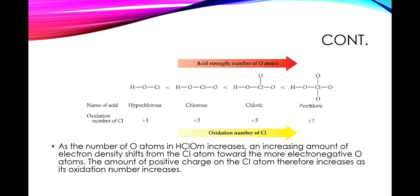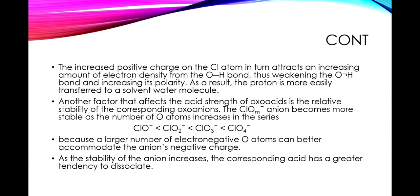As the number of oxygen atoms in HClOm increases, an increasing amount of electron density shifts from the chlorine atom towards the more electronegative O atoms. The amount of positive charge on the chlorine atom therefore increases as its oxidation number increases. The increased positive charge on the chlorine atom in turn attracts an increasing amount of electron density from the O-H bond, thus weakening the O-H bond and increasing its polarity. As a result, the proton is more easily transferred to a solvent water molecule.